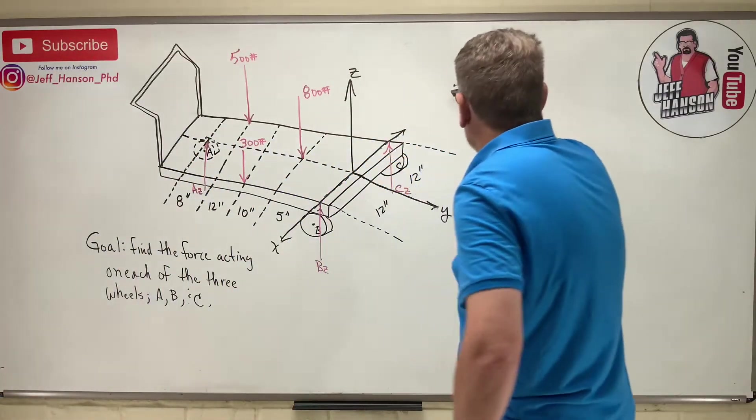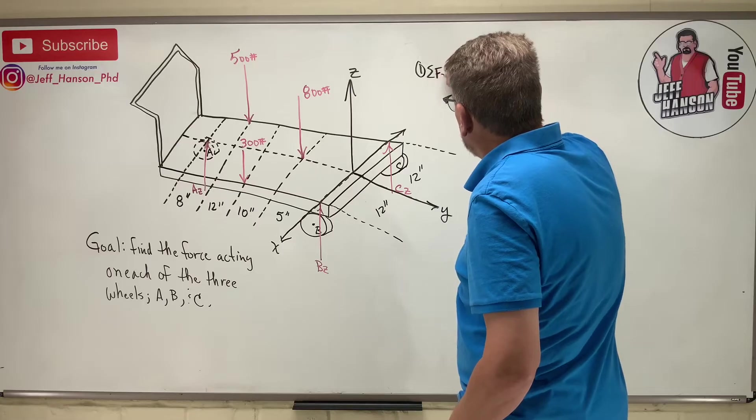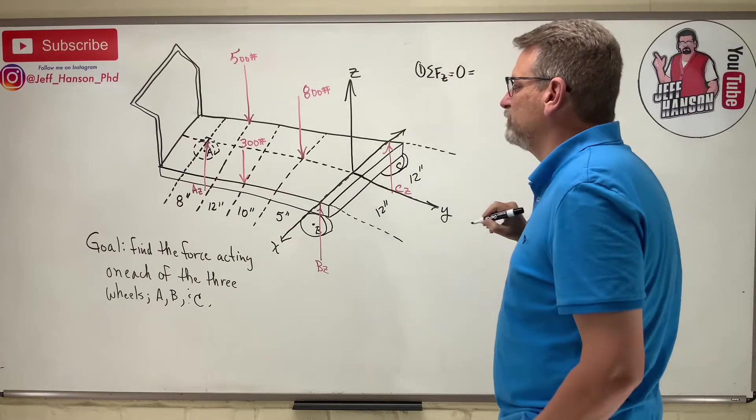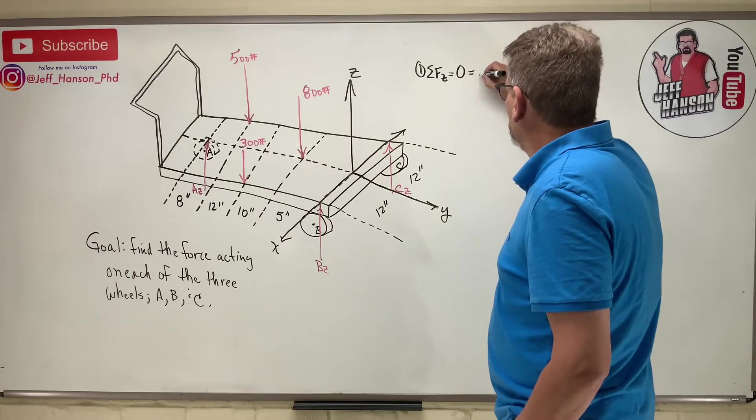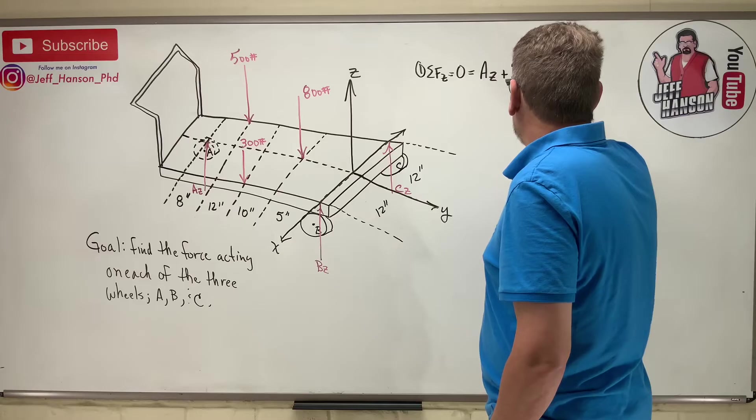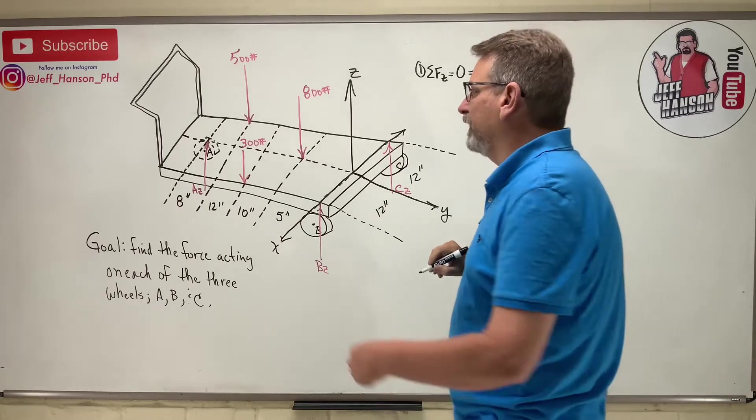How many forces in the z? Okay, everything is in the z. So here's what we have: equation number one, which is the sum of the forces in the z direction, is what's going uphill? Well, Az plus Bz plus Cz minus the loads.